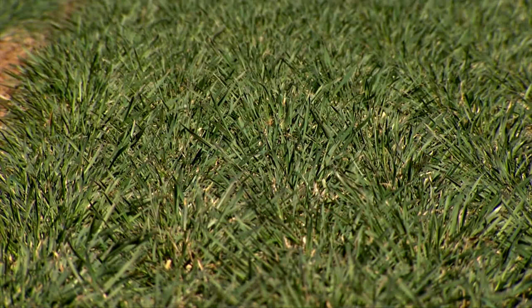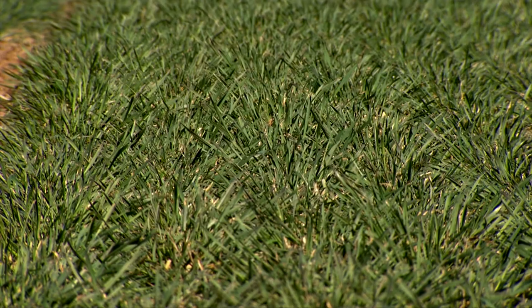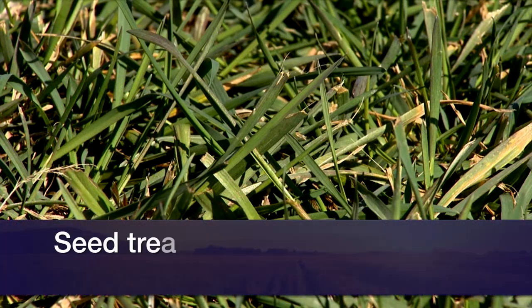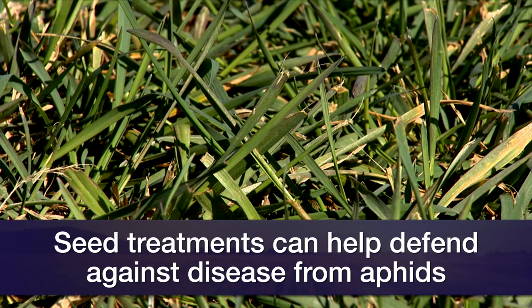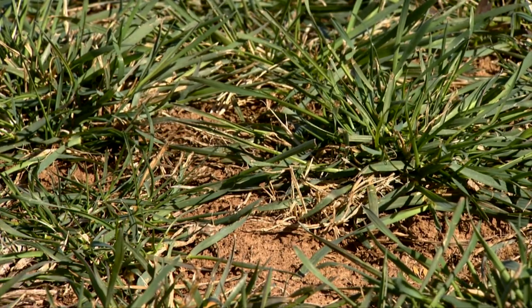Sure. Not so much with the wheat streak mosaic virus and those mite-transmitted viruses. But planting later leaves a much shorter time for those infections to occur, and that can also affect the root rots a little bit. Now, seed treatments can help some as well — not with wheat streak mosaic virus, but with the aphid-transmitted barley yellow dwarf, because the seed treatment will help keep plants free of aphids for several weeks up to maybe a month. It can also help with root rots if it has a fungicide in it, because that fungicide can suppress some of the early season root rots.